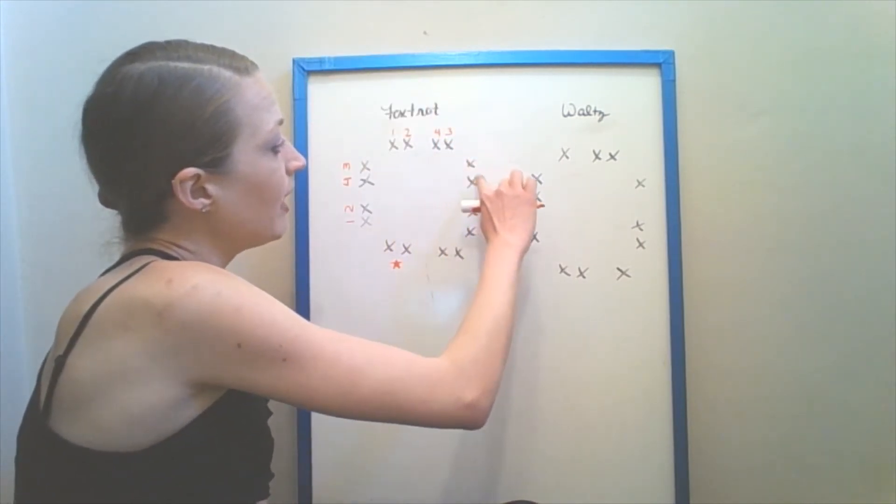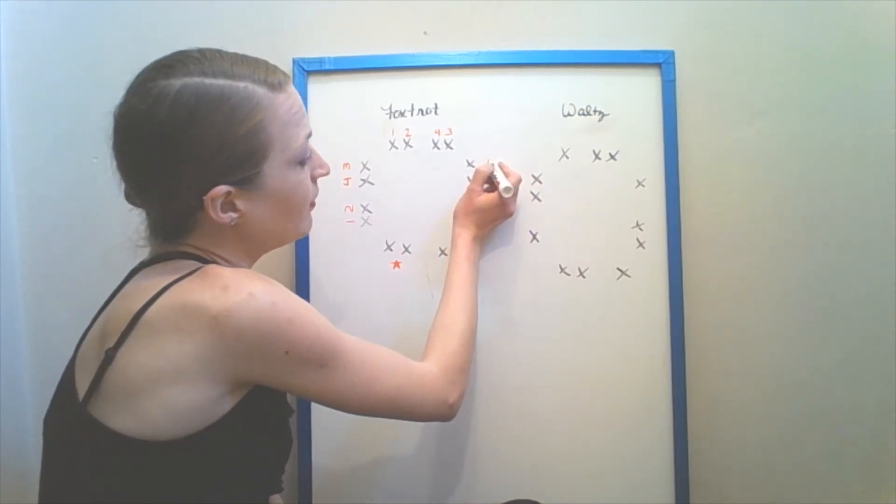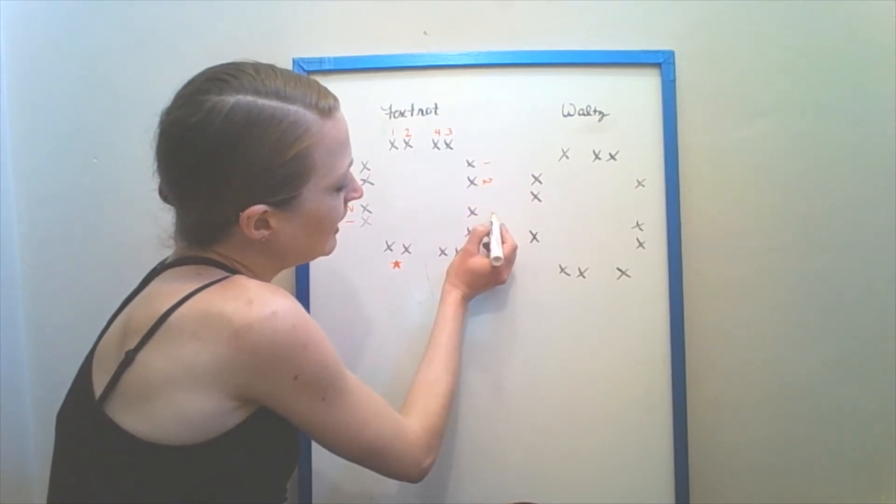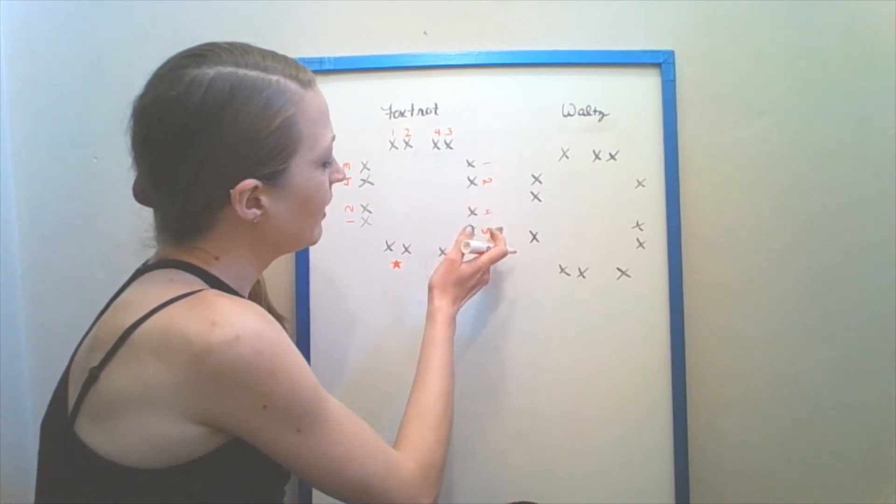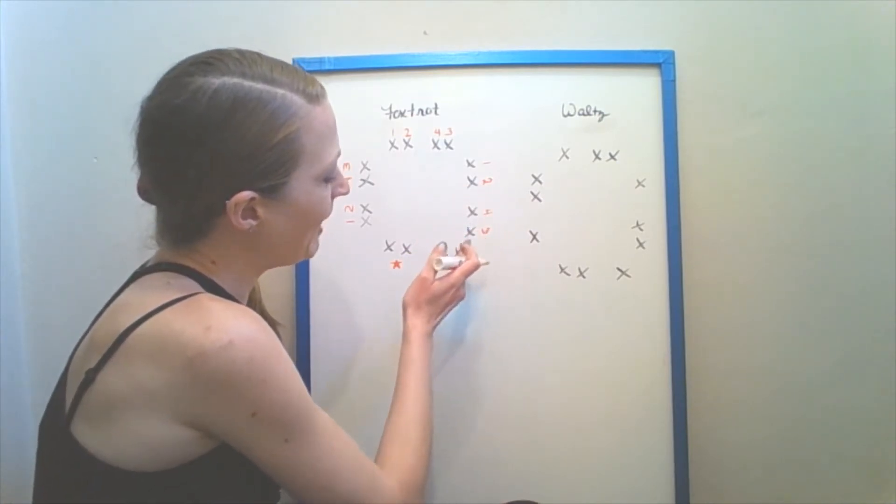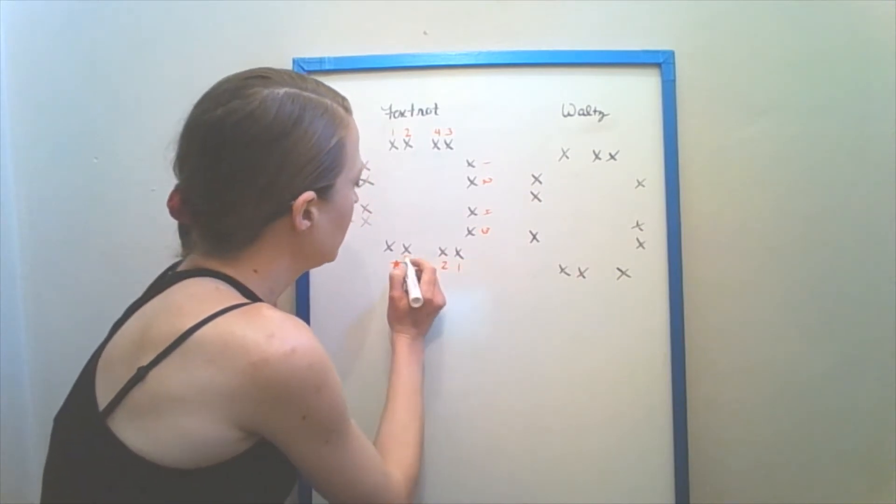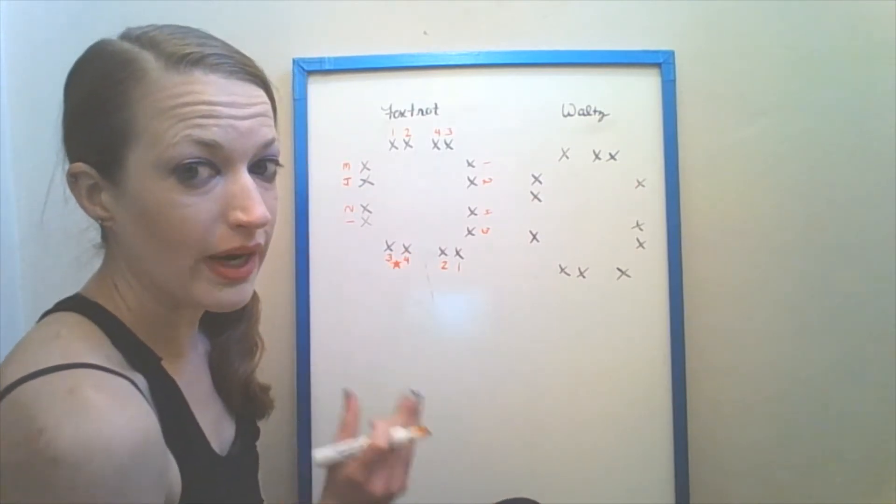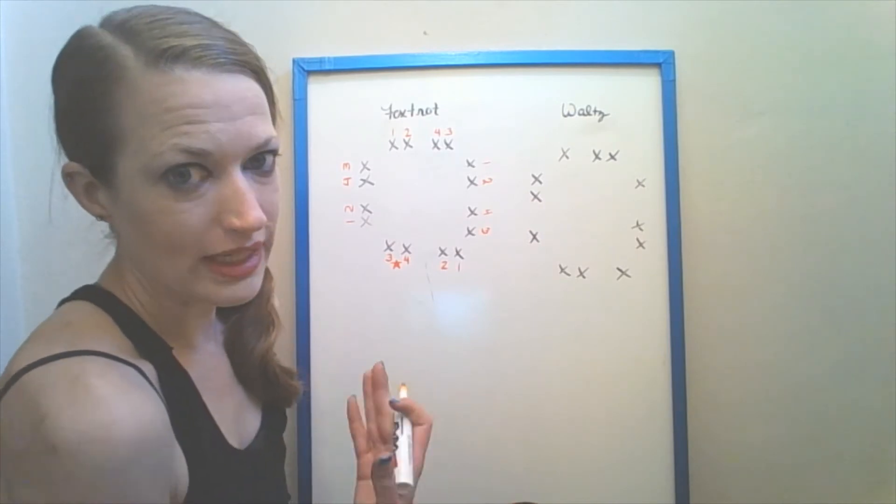Now I'm going to face outside. So I step with my left foot one, together on two, side three, together on four. From here I move myself backwards. One, together on two, side three, together on four, and I'm back exactly where I started. And I'm facing the exact same way as to how I started.